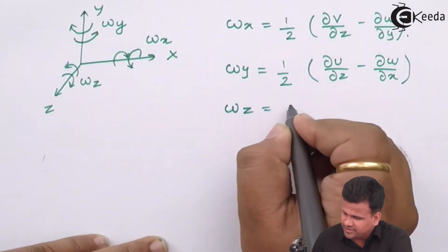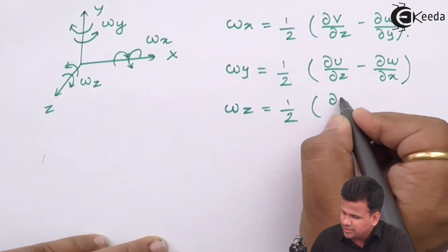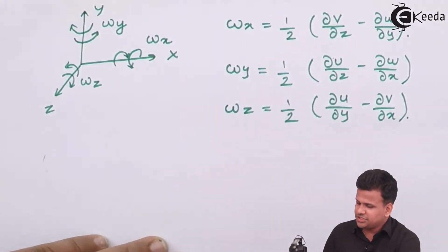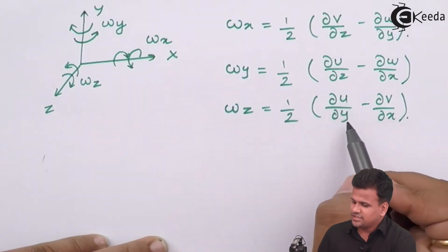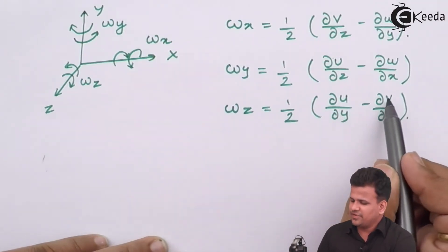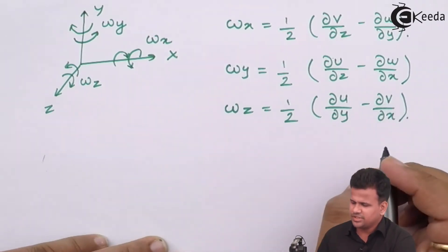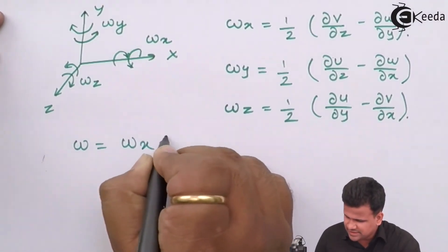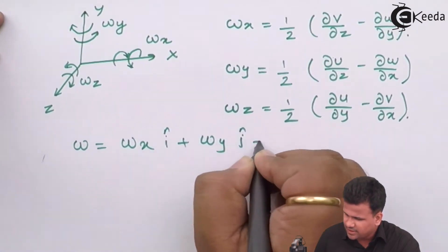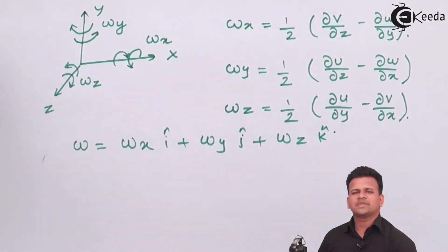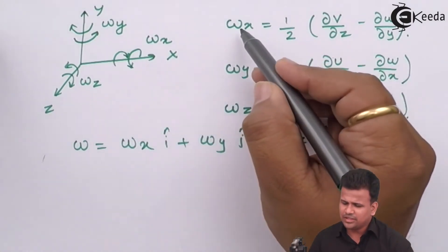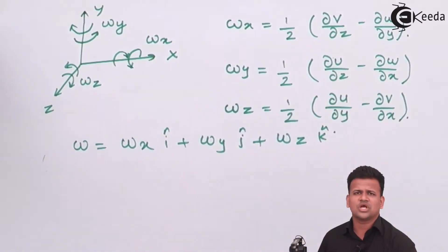Omega_z can be written as half of (∂v/∂x − ∂u/∂y) — the change in velocity along the x-direction with respect to y, minus the change in velocity along the y-direction with respect to x. The total angular velocity omega can then be written as: omega = omega_x î + omega_y ĵ + omega_z k̂. Note that this formulation is valid for rotational flow, where one molecule rotates over another and will have angular velocity components along all three directions.